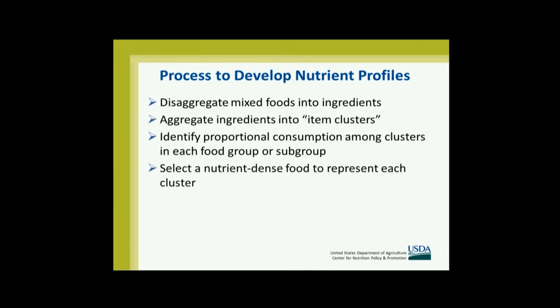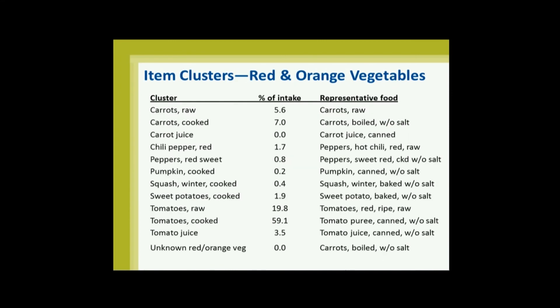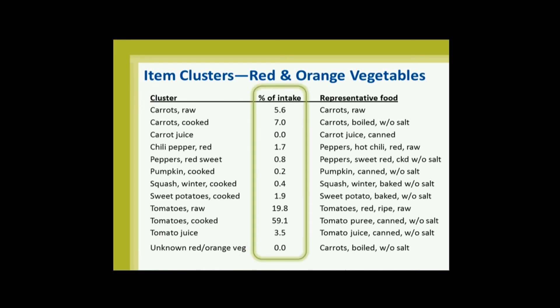Then we select one food to represent that cluster. These are all of the item clusters in the red and orange vegetable subgroup — we have a long list of them, and we have a percent of red and orange vegetable intake for each. Those of you who follow the food patterns know that we put tomatoes and red peppers into the orange vegetable category because we only had four foods before — it was very small. Tomatoes are a large part of consumption, so we created a more realistic food group by putting red with orange. They dominate — 60% of this group is now cooked tomatoes. Cooked carrots are 7%.